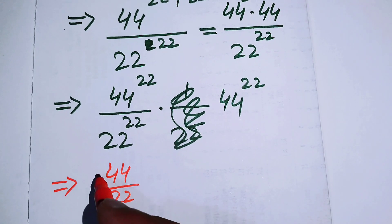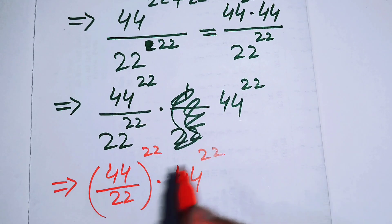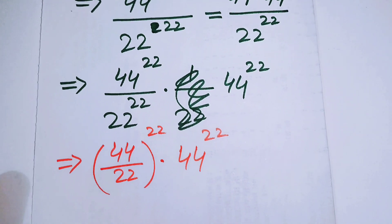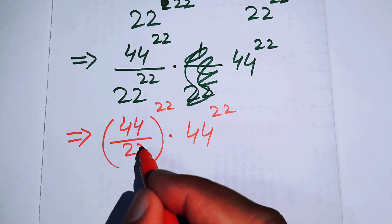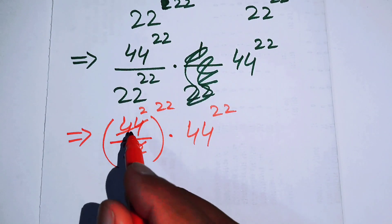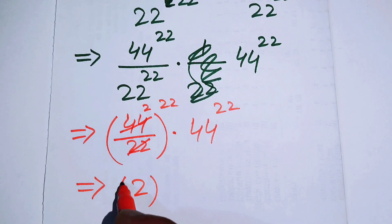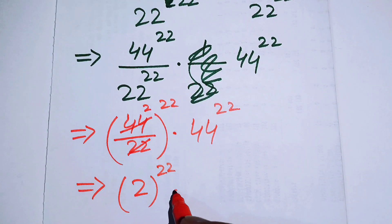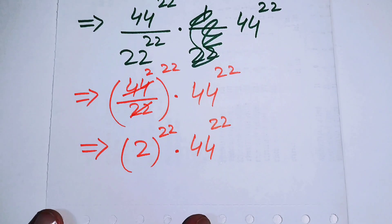We get 44 over 22, raised to the power of 22, times 44 to the power of 22. Dividing 44 by 22 gives 2, so we have 2 to the exponent of 22 times 44 to the exponent of 22.